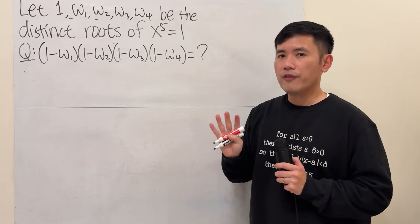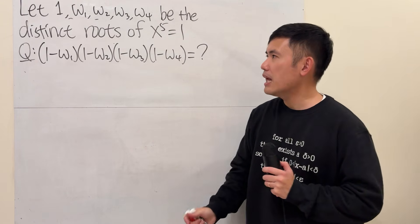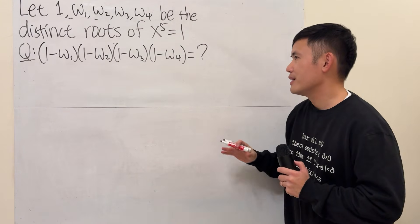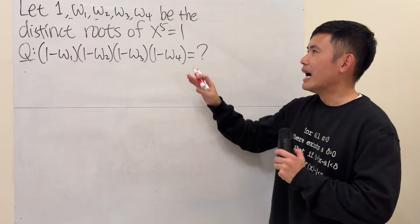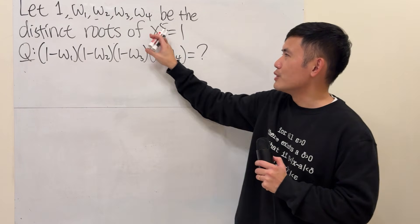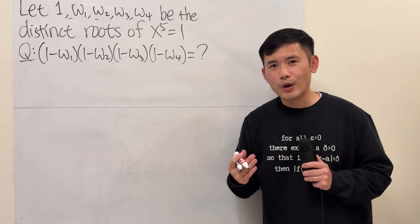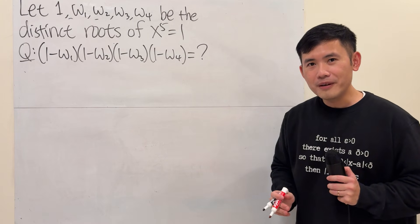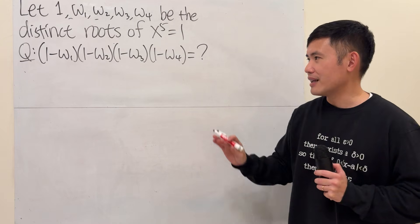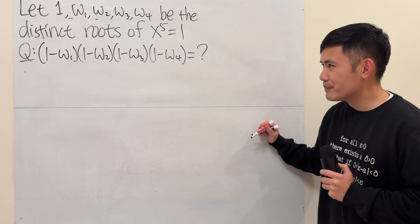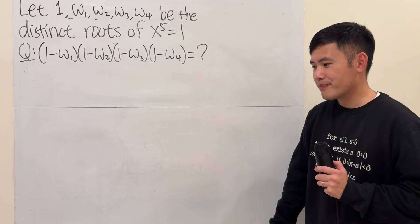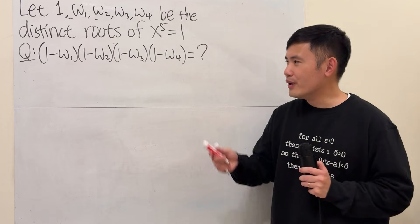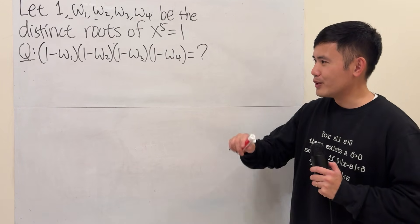This equation has 4 other roots, and they are all complex — we denote them as omega 1 through omega 4. If you want to see how to find all the solutions to this equation, check out one of my previous videos — the link will be in the description. But luckily, we do not need to do that to solve this problem. This is a good place to pause and think about it first before continuing to the solution.